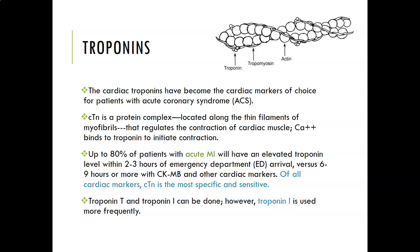Now let's talk about troponins. Troponins are found in all muscle tissue, but they have become markers of cardiac damage. The cardiac troponins are really the gold standard — the markers of choice for people with acute coronary syndrome, meaning to help detect a heart attack. The cardiac troponin is a protein complex located along the thin filament of myofibrils inside muscle cells. Myofibrils, along with the troponins, help regulate the contraction of cardiac muscle. Calcium binds to troponin to initiate muscle contraction.